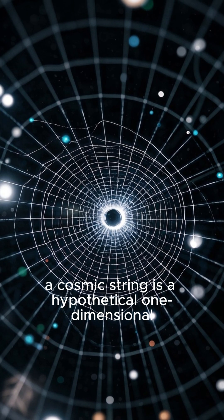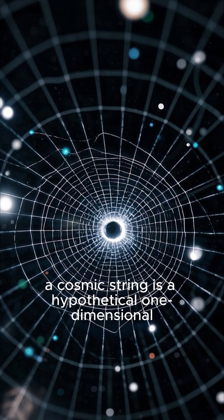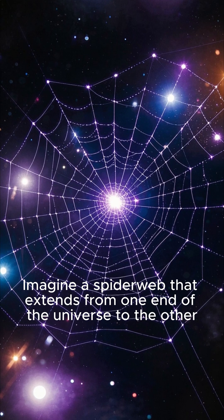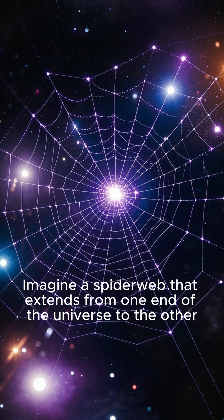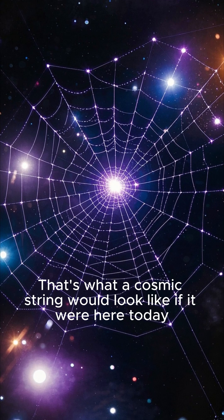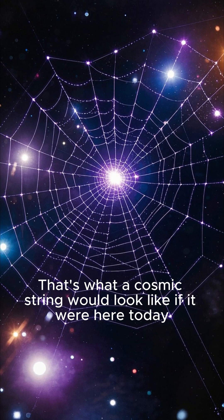In cosmology, a cosmic string is a hypothetical one-dimensional defect in space. Imagine a spider web that extends from one end of the universe to the other. That's what a cosmic string would look like if it were here today.